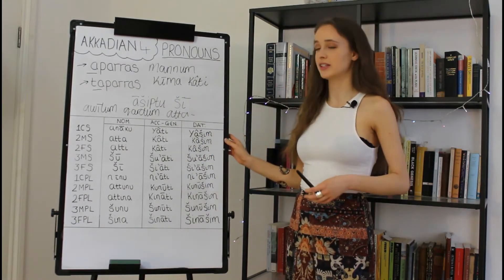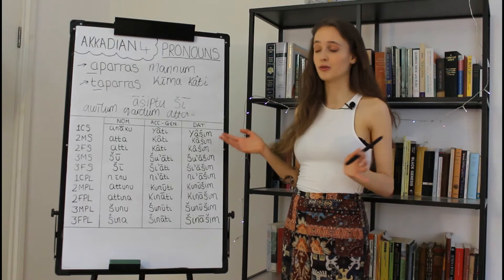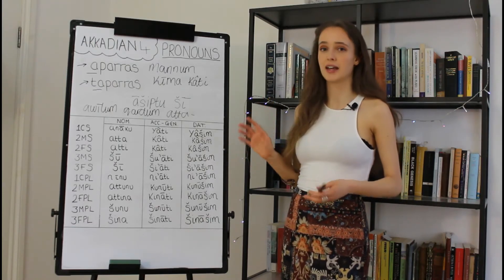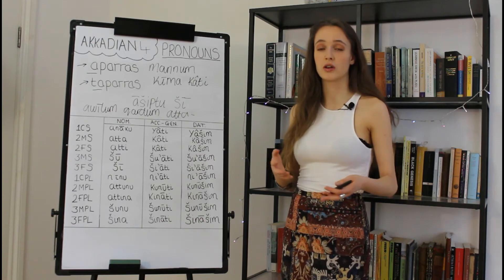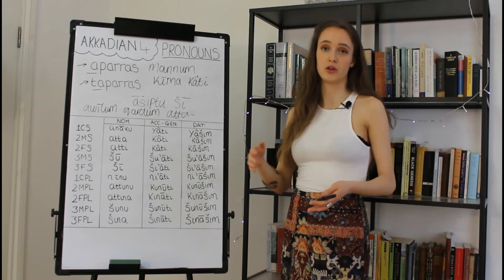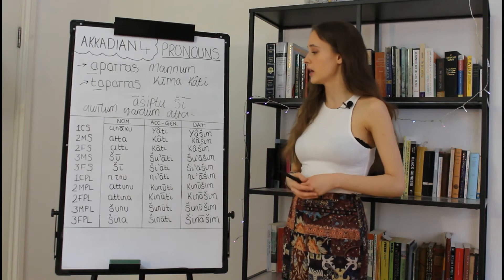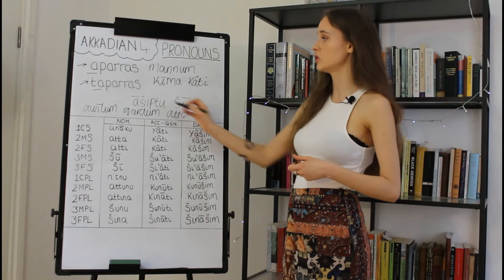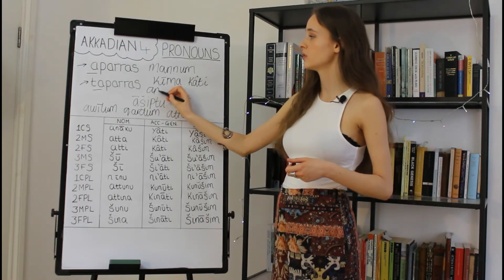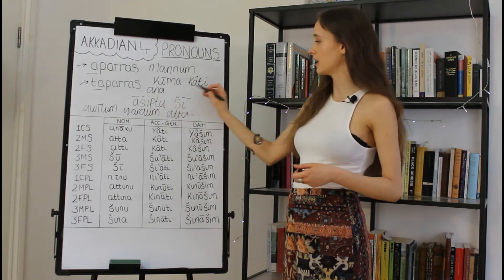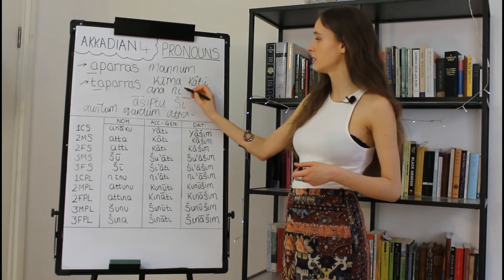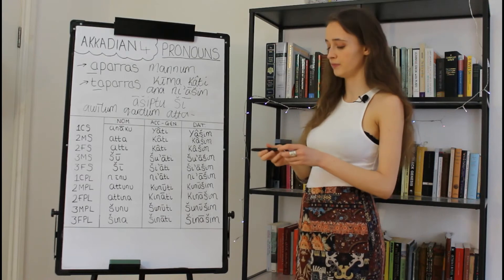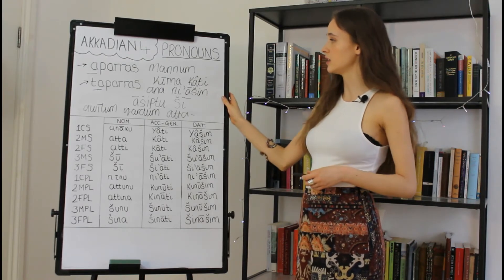Moving on to our final set of independent pronouns — the dative. The dative is a case which functions as the recipient of an action, so they're translated as 'to me,' 'to you,' 'to him,' 'to her,' etc. The dative pronouns will usually only be seen following the preposition 'ana,' which translates as 'to' or 'for.' For example, 'ana niāšim' would translate as 'to us.'